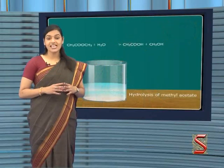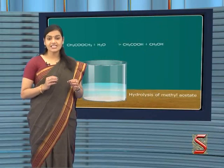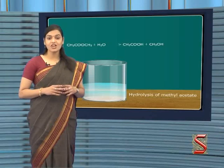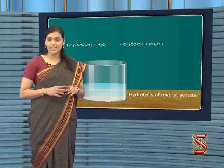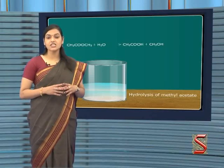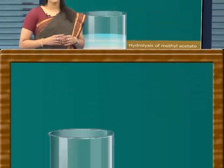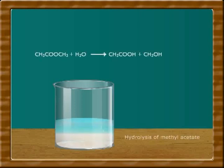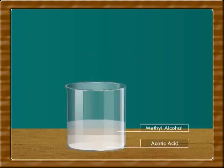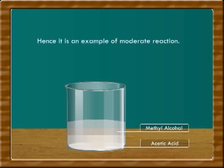Let us discuss one more example of moderate reactions — the hydrolysis of methyl acetate. Methyl acetate belongs to the ester family. Reaction of any reactant with water is known as hydrolysis. Here, methyl acetate is reacting with water, so this is known as hydrolysis of methyl acetate. The products formed are acetic acid and methyl alcohol. This requires quite a long time, hence this is an example of a moderate reaction.